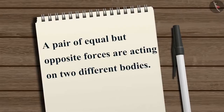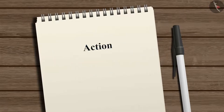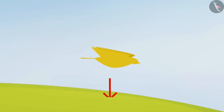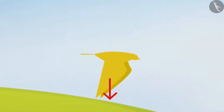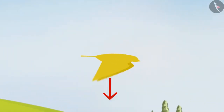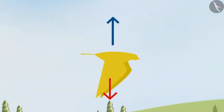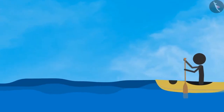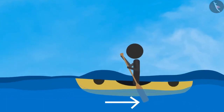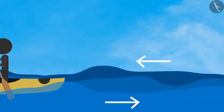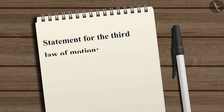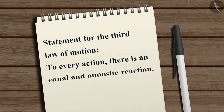In these examples we observed that a pair of equal but opposite forces act on two different bodies. We can refer to one as the action and the other as the reaction. In the first example, the bird flapping its wings downwards is the action, and the force that helps the bird fly is the reaction. In the second example, pulling the oar backwards is the action and the boat moving forward is the reaction. This gives us the statement: to every action there is an equal and opposite reaction.